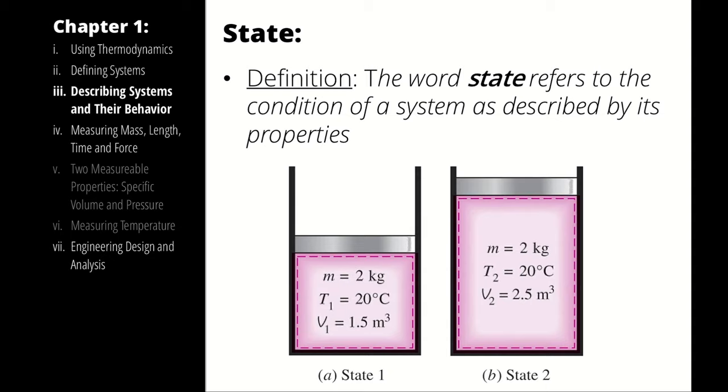Another thing to note on the discussion of state points is that it takes two independent intensive properties to fully define a state point. That means, once we have identified two independent intensive properties, that state point is fixed. From that information, we can describe the rest of the independent intensive properties. If I know the temperature and pressure of air, I can figure out what its density is, because the state point is fixed. It takes two independent intensive properties to fully define a state point.